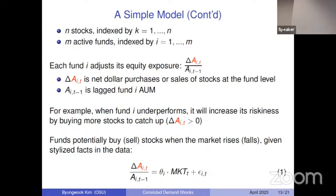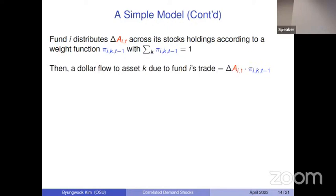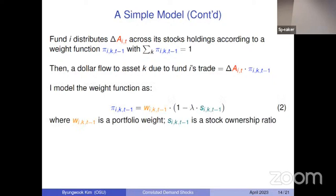Given this quantity, the fund distributes this amount across stocks according to a predetermined weight function called pi. For example, if delta A is $100 and I buy $40 of stock A and $60 of stock B, the weights are 40% and 60% respectively. I model pi as a function of portfolio weight, where lambda is another parameter to be estimated, and S is the ownership ratio of the fund — how many shares the fund holds divided by total shares outstanding. When lambda equals zero, the weight function is simply the portfolio weight, meaning funds scale up or down in proportion to their current holdings.